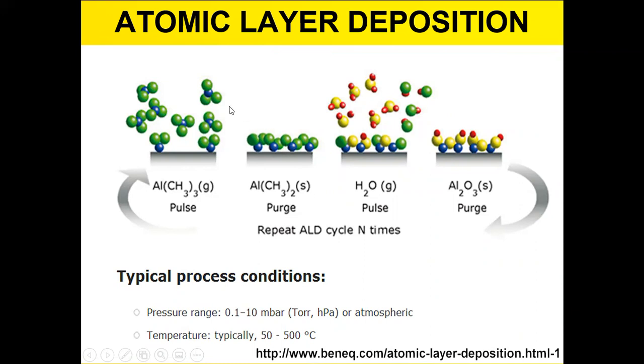Any excess material is pumped away. Once it's cleared out, we put in the second material, the second gas, which in this case is actually water. It reacts with what's already there to create aluminum oxide. So we have one atomic layer thick of aluminum oxide. Then we repeat that cycle however many times necessary to make the optical thickness that we want.